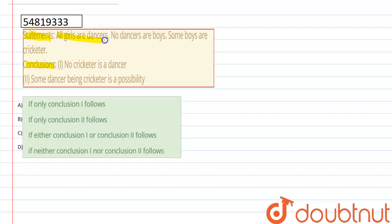All girls are dancers, no dancers are boys. Some boys are cricketers. So, conclusions are drawn from given three statements here. Let's see if the statements are taken by the conclusion.